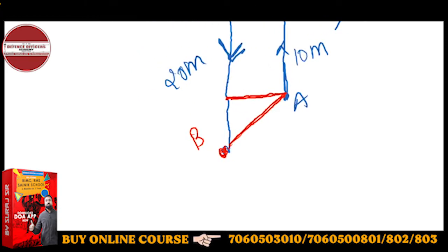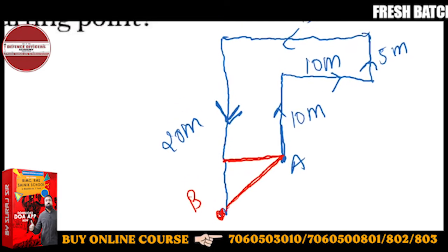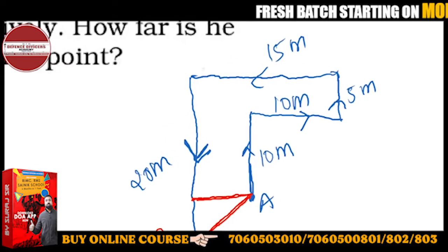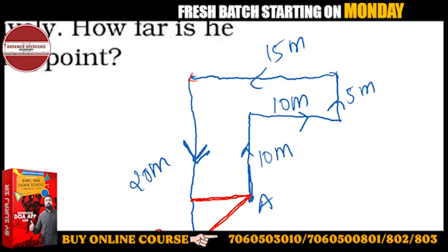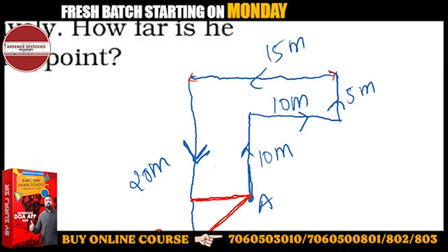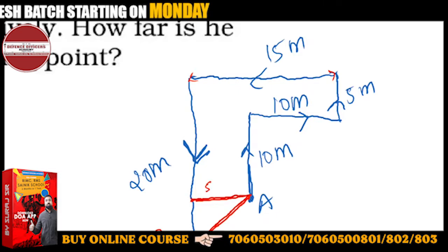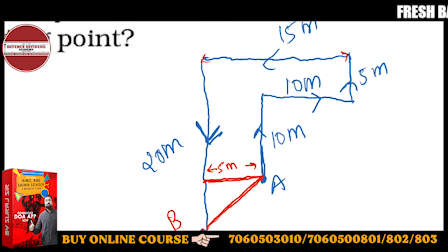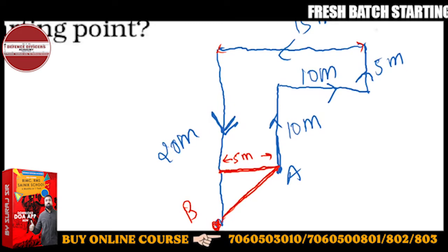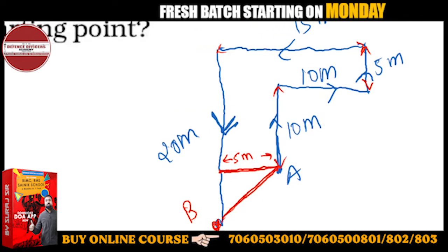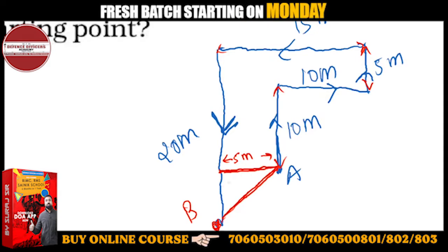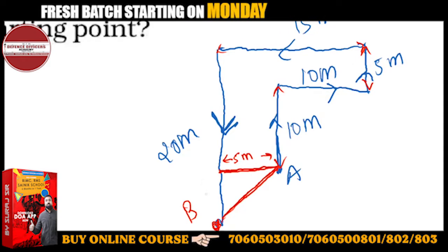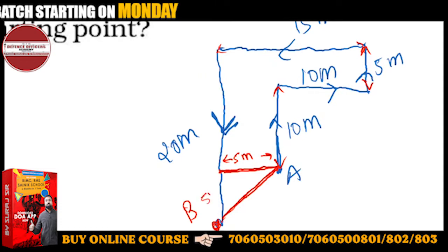Let me zoom this diagram for you. So this side will be 15 meters, and this will be 5 meters. If I talk about the height: this one is 5, then this is 10, this is 10 — so remaining, because total is 15, 20 minus 15 will be 5. This will also be 5 meters.